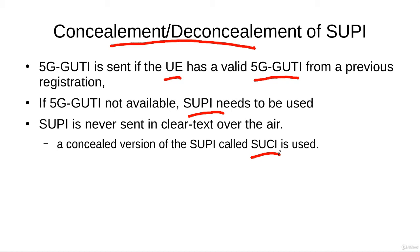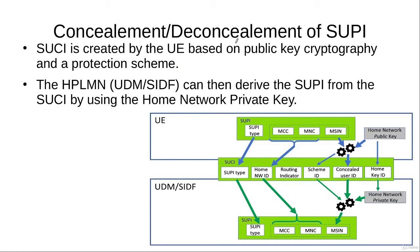The SUCI is then sent over the air interface, and this encryption is carried out in the user equipment. When you look at the format of the SUPI, you have the SUPI type, the mobile country code, the mobile network code, and the mobile subscriber identification number. The SUPI type indicates whether it is a 3GPP SUPI or a non-3GPP SUPI — in a 3GPP SUPI you use the IMSI, but in a non-3GPP SUPI you use other identifiers. More specifically, it is the mobile subscriber identification number that is encrypted.